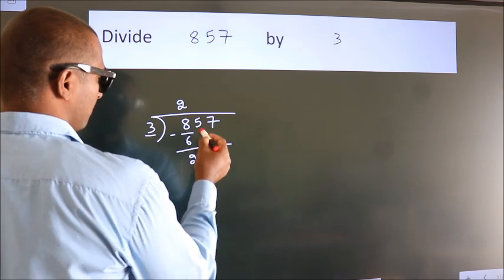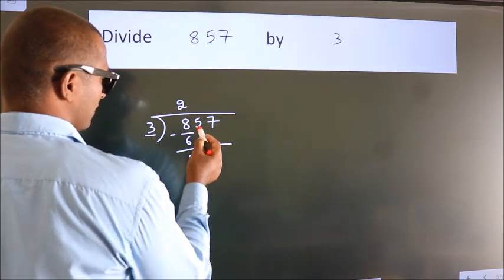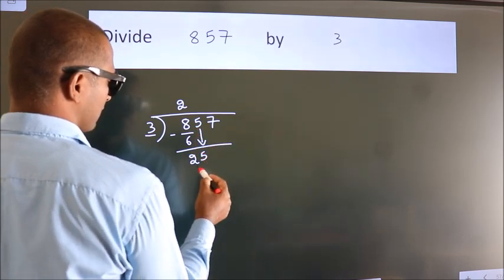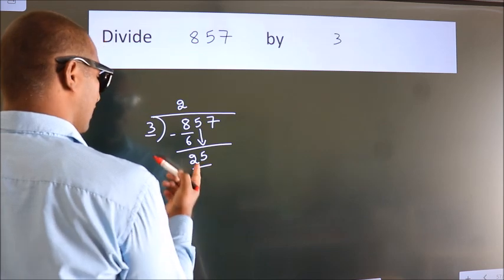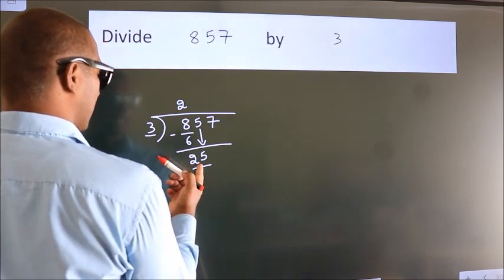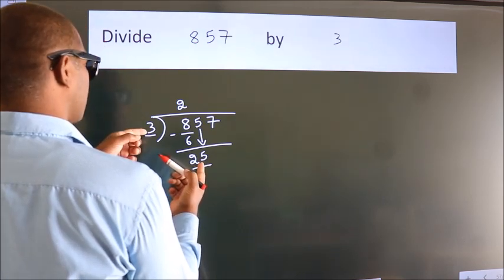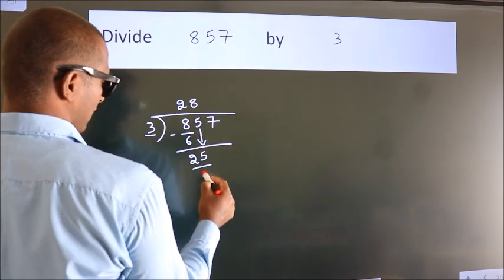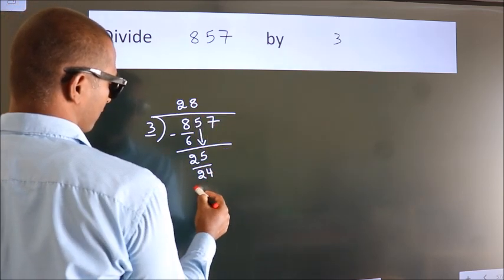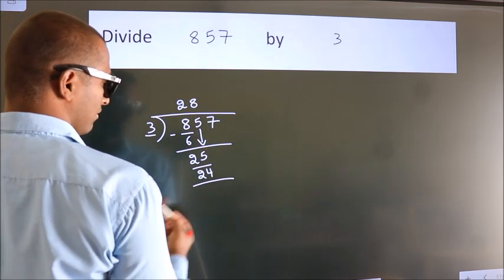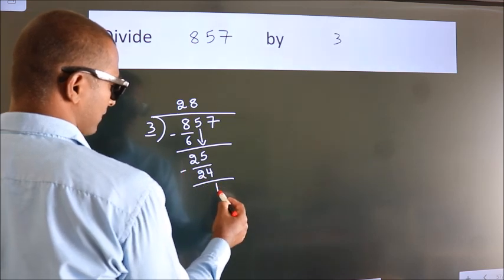After this, bring down the beside number. So 5 down. So 25. A number close to 25 in 3 table is 3 8s, 24. Now we subtract. We get 1.